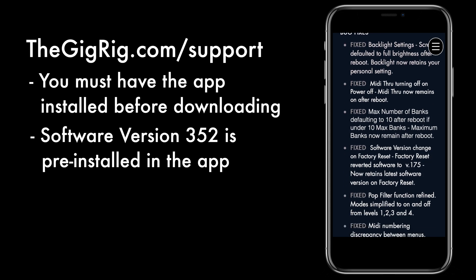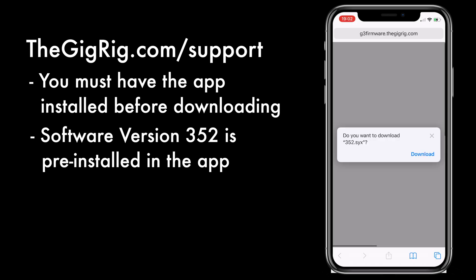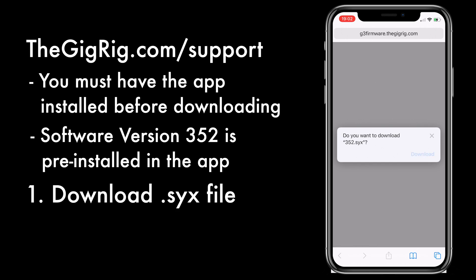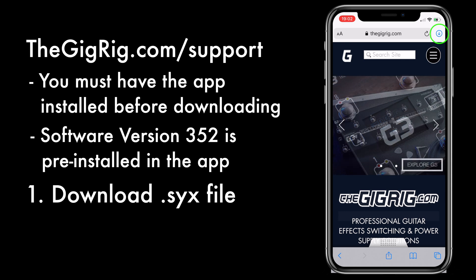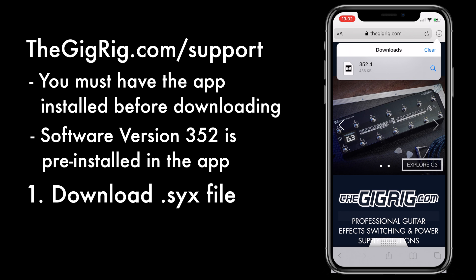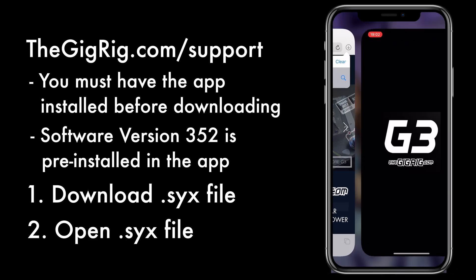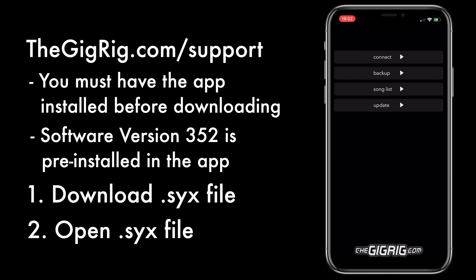It also gives you a list of bug fixes and what's new and stuff like that. For later versions, you'll see the software number. Click on that, and it asks you if you want to download the SysX file. Hit download, and then top right-hand side, you will see a little download arrow. If you press on that download arrow, you will see the SysX file. Press on that and it will open in the app.